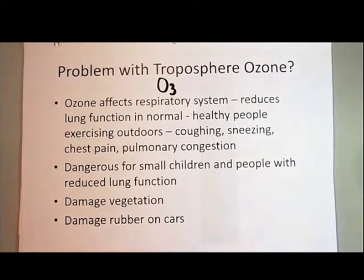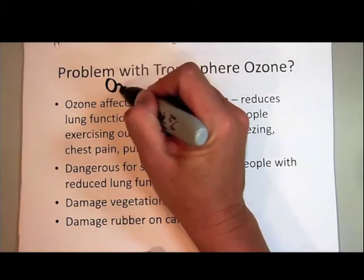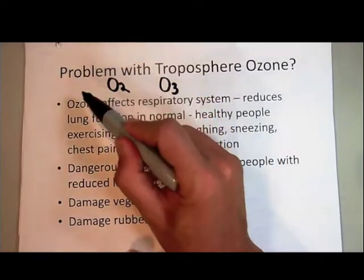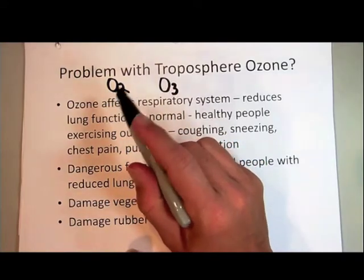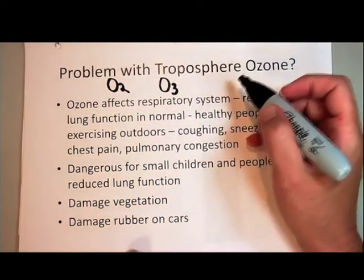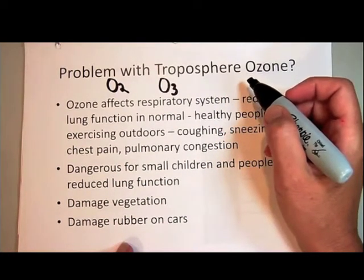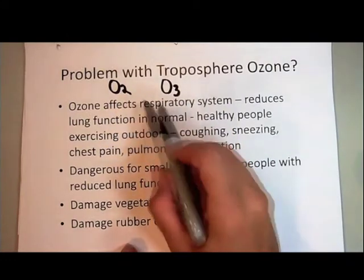Ozone is what we call an allotrope of oxygen. Elemental oxygen normally exists in the dominant form of O2, which is the stable elemental form. But sometimes elements can exist in different forms, and that's called an allotrope. For example, carbon can be found in nature in the form of graphite or diamonds — it's all just elemental carbon, just arranged differently. So we call them allotropes. The same applies to elemental oxygen and ozone.